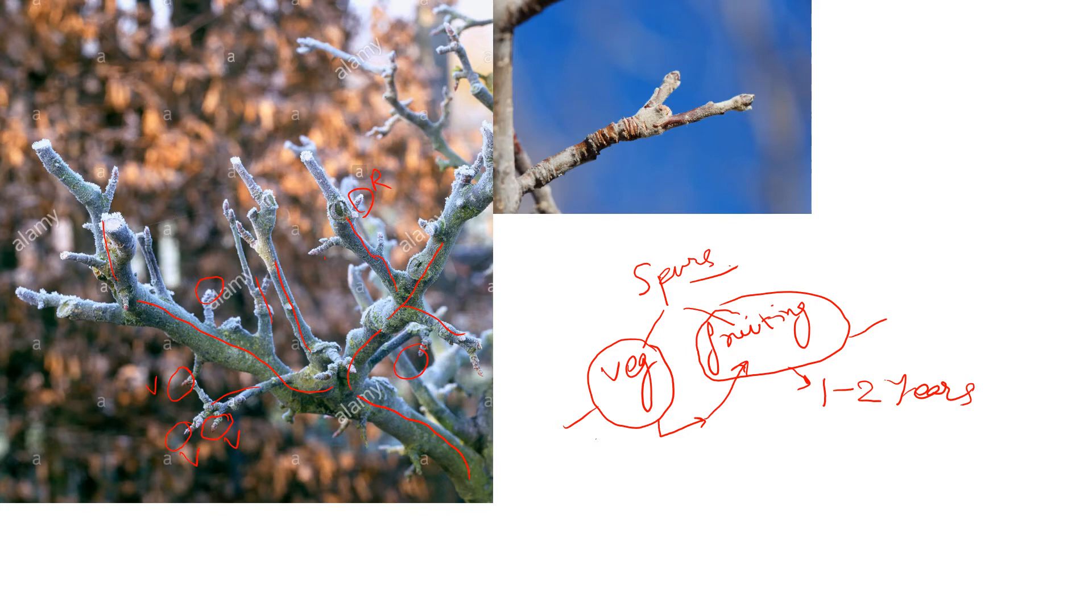In this zoomed picture, it is clearly visible how a reproductive or fruiting bud looks like. It looks round in shape, so the dome-shaped bud is the fruiting bud.